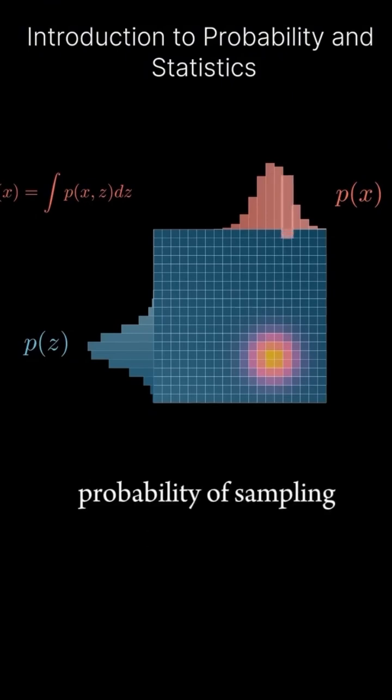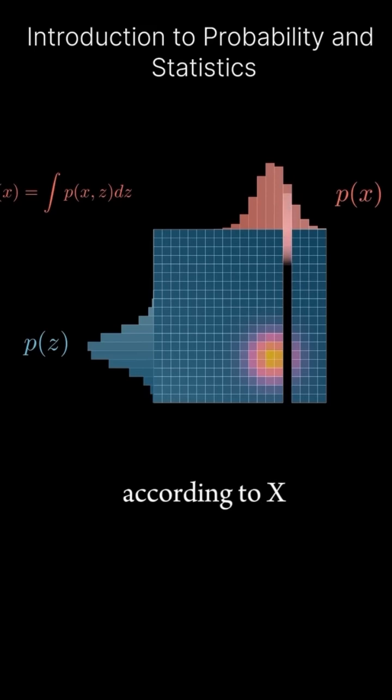For example, to find the probability of sampling a specific value according to x, we integrate the joint distribution over all possible values of z.